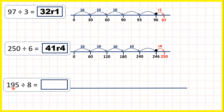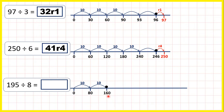Now 195 divided by 8. We can start by counting in steps of 10 times 8, so in steps of 80. 10 times 8 is 80. If we add another 10 steps of 8, so another 80, that takes us to 160. But then from 160, if we jumped another 10 steps of 8, that would be 240, so that would be too many.